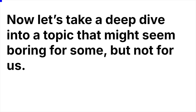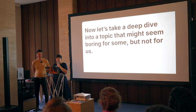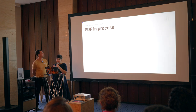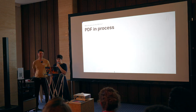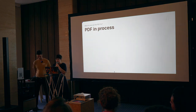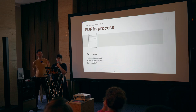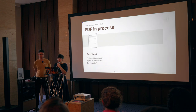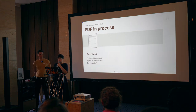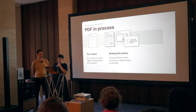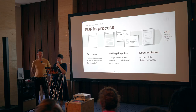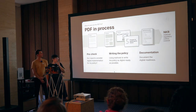Let's take a deep dive into a topic that might seem boring for some, but which is actually very important for us: a PDF. The PDF is the primary document we provide at the moment to policy drafters to complete a digital check for the policies they are producing. Step one is a simple pre-check that determines whether they should consider digital implementation while writing the policy. Step two is simply writing the policy as digital ready as possible using various methods. And step three is the documentation of the digital readiness, which is then sent to the national regulatory control council who checks this.